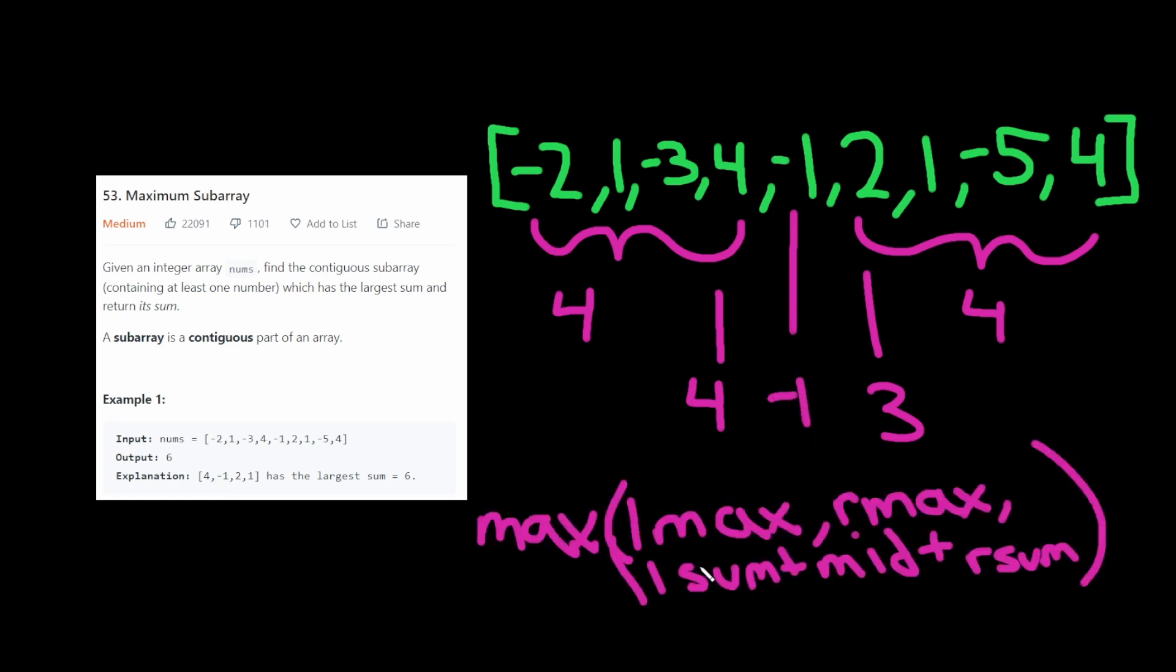So the output is going to be the maximum of the left max, right max, left sum plus mid plus right sum. So in this case it's going to be the maximum of 4, this is 6, and this is 4 which equals 6.